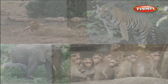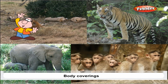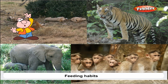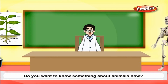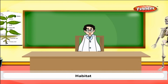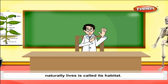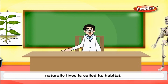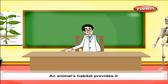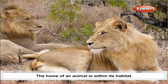Amazing animals. In this chapter you will learn about habitat, body colorings, feeding habits, organs of breathing, and movement. An area where a particular animal naturally lives is called its habitat. An animal's habitat provides it air, water, food, and shelter.